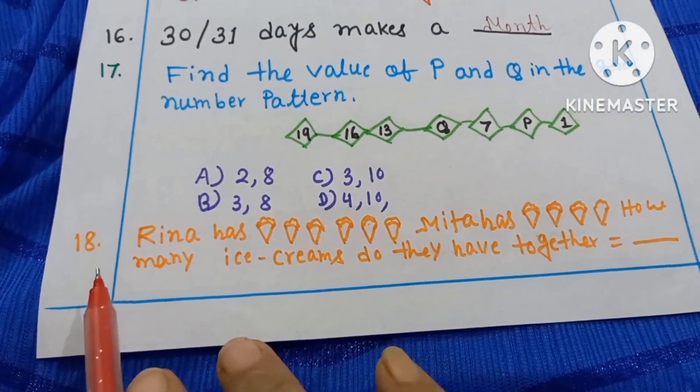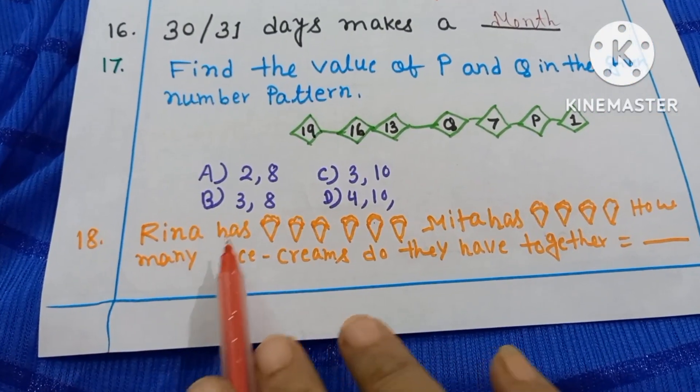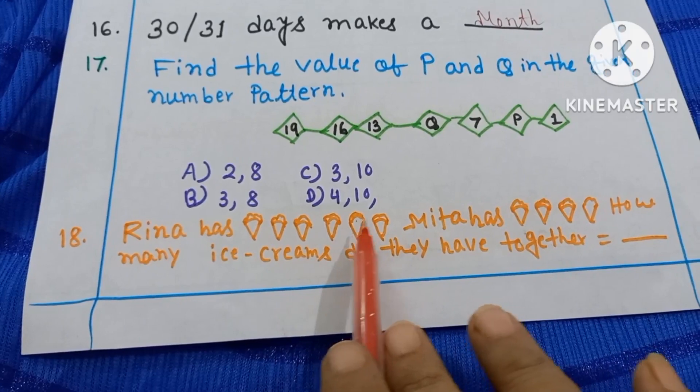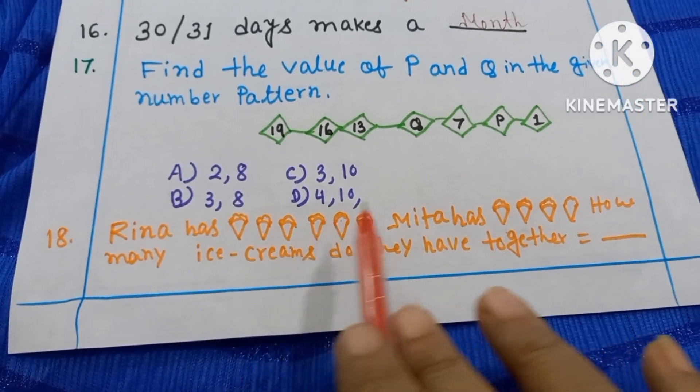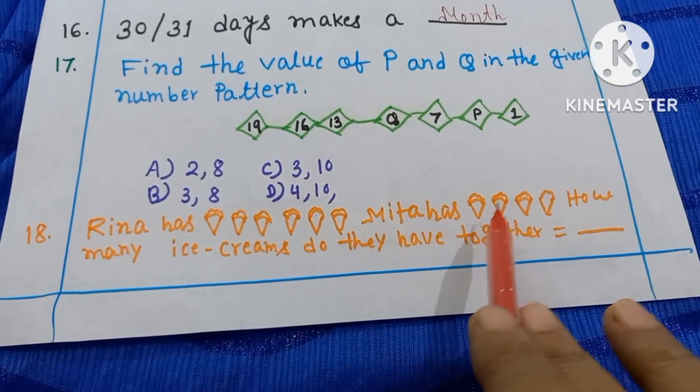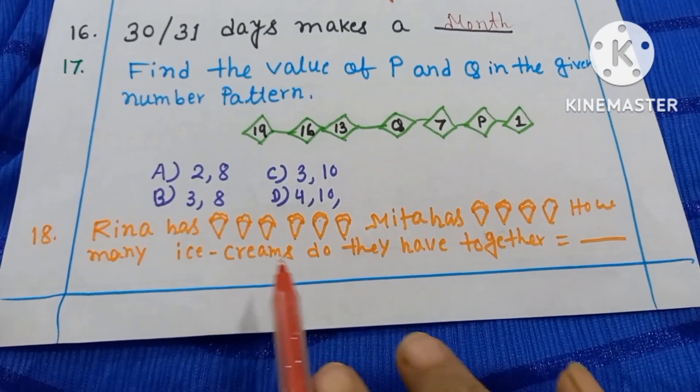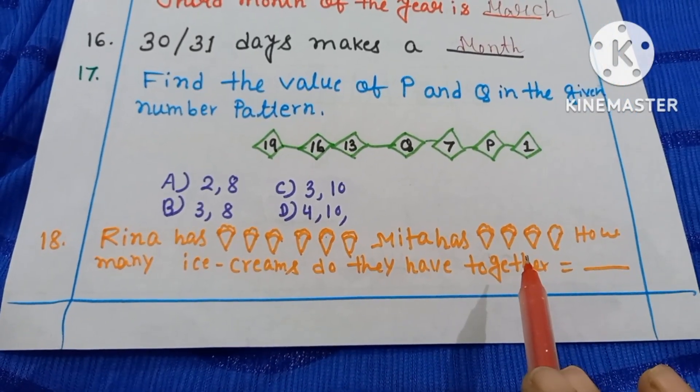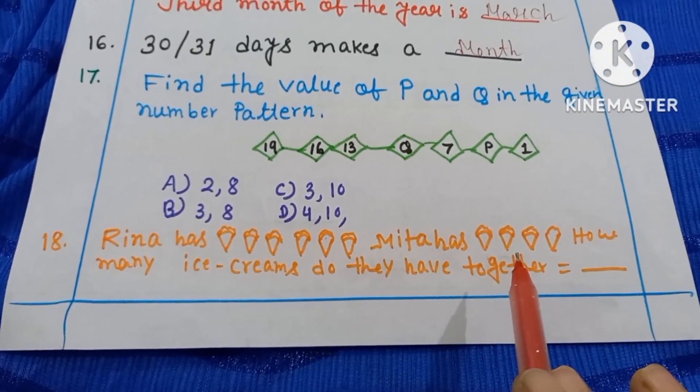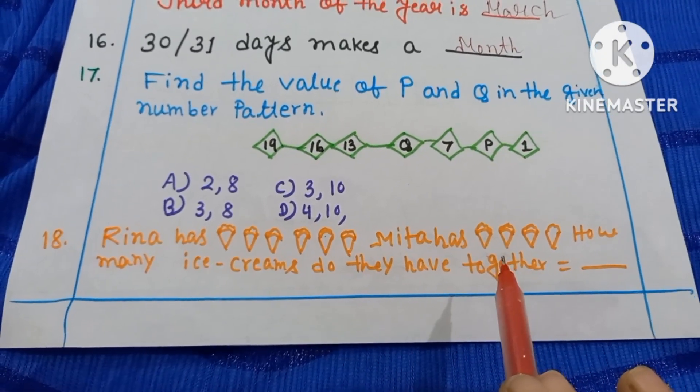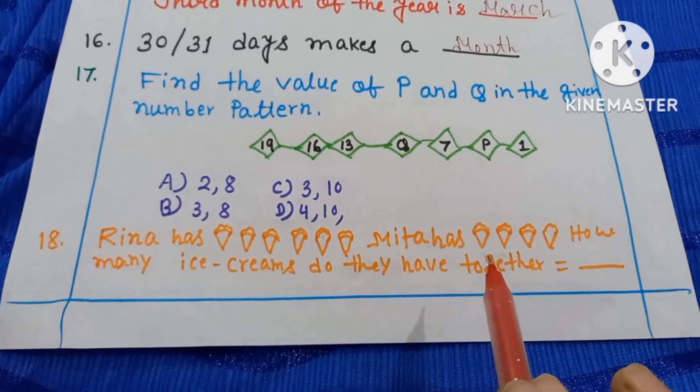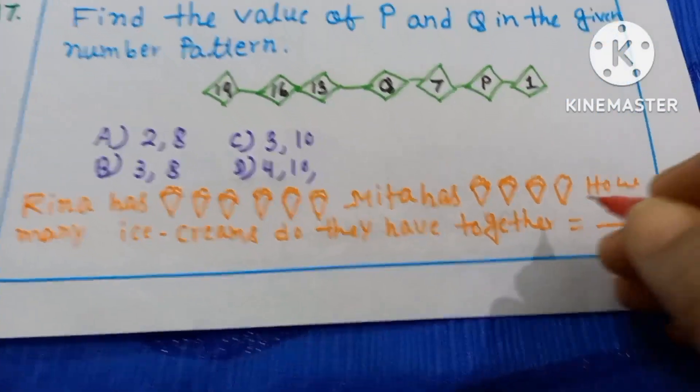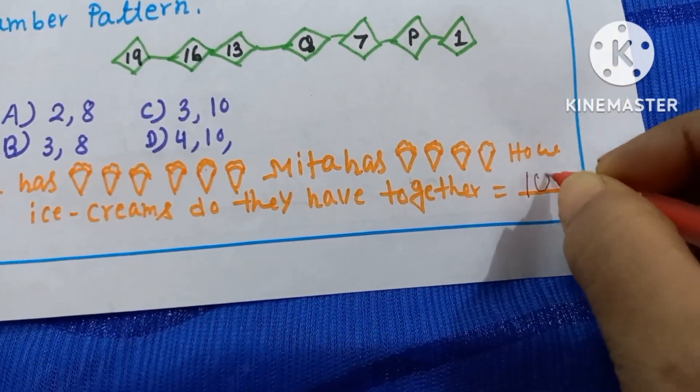Last question, question number 18. Rina has how many ice creams? 1, 2, 3, 4, 5, 6 ice creams. Meeta has 1, 2, 3, 4. So how many ice creams do they have together? Together means, in my previous video you can check, I have taught you together means addition. So 6 plus 4 equals 10. Here you have to write 10.